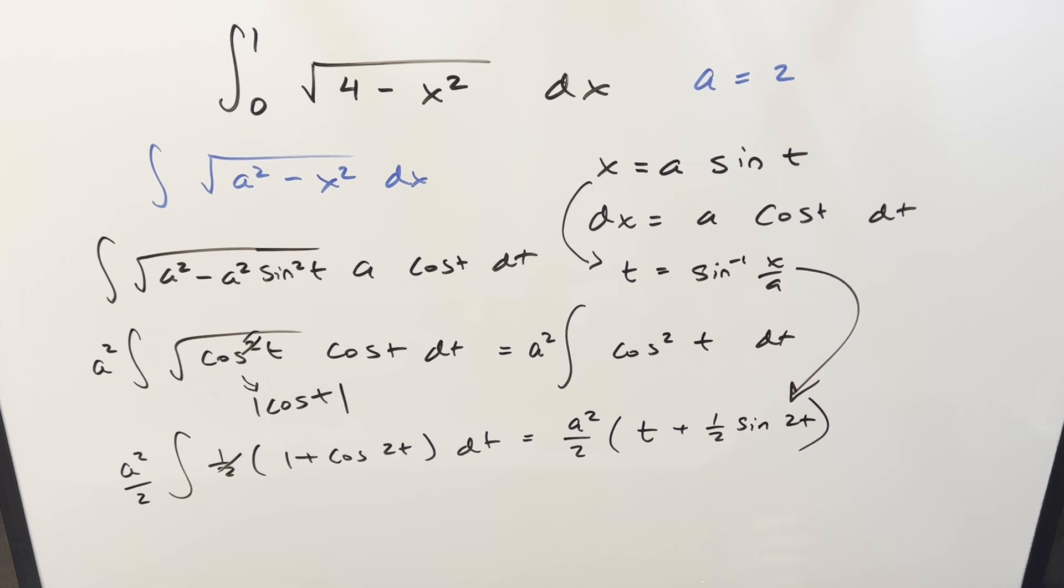But before I do that, one thing we can do, see sine of two t is a problem as we've got it in terms of just the single angle. Well that's no problem. I can take, here we can have one half, sine two t I can write as two sine t cos t, but then I can cancel two with the half right there.